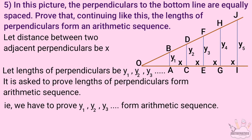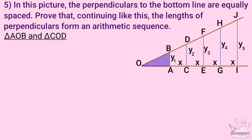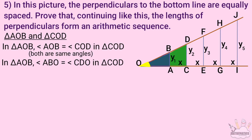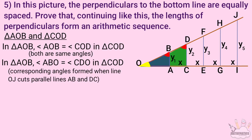We are going to use triangles. Consider triangle ABM and triangle CDM. The perpendiculars AB and CD, with line n cutting through and forming corresponding angles.